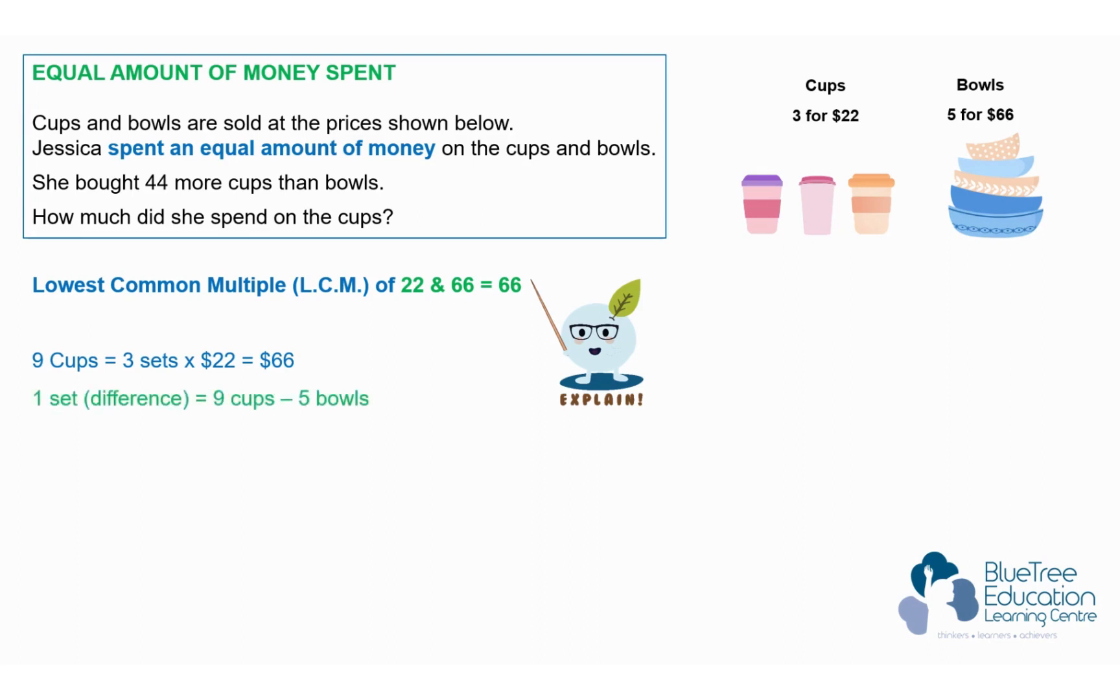Since the information given is about the difference, 44 more cups than bowls, we need to compare the cups and bowls. Nine cups minus five bowls, which means there are four more items. The difference is four. That's one basic set.